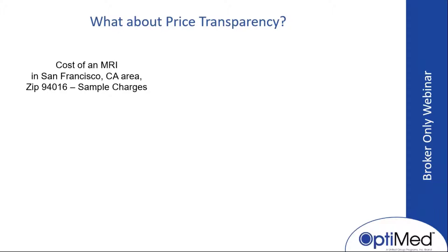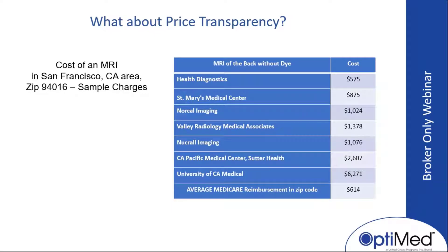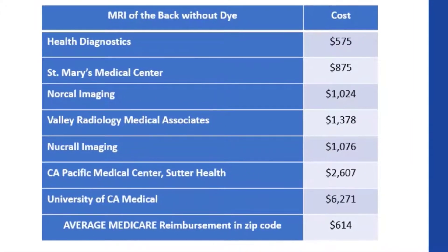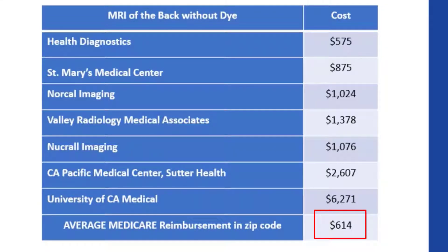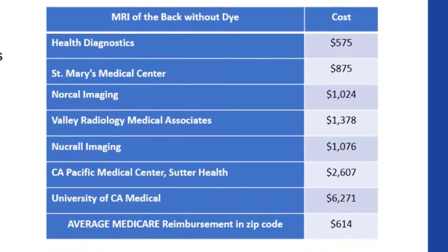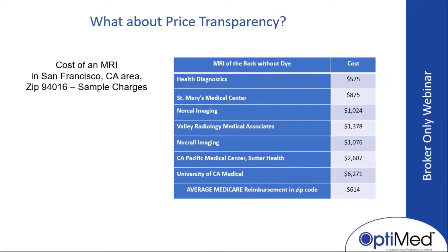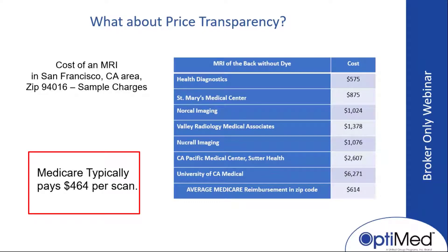Let's look at price transparency with a concrete example: the cost of an MRI in San Francisco, zip code 94016, without dye on a back. Health Diagnostic: $575. St. Mary's: $875. NorCal: $1,024. Valley Radiology: $1,378. California Pacific Medical Center: $2,607. University of California Medical: over $6,000. The average reimbursement by Medicare? $614. If you go across the United States, Medicare typically pays $464 for the scan. These are all the same machine producing the same results — you're paying for markup.